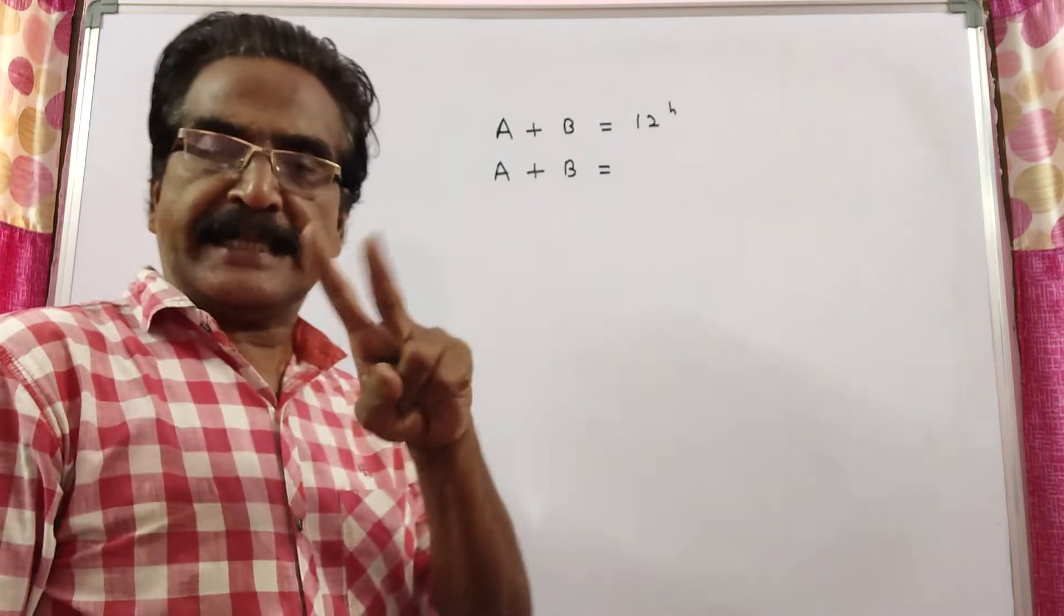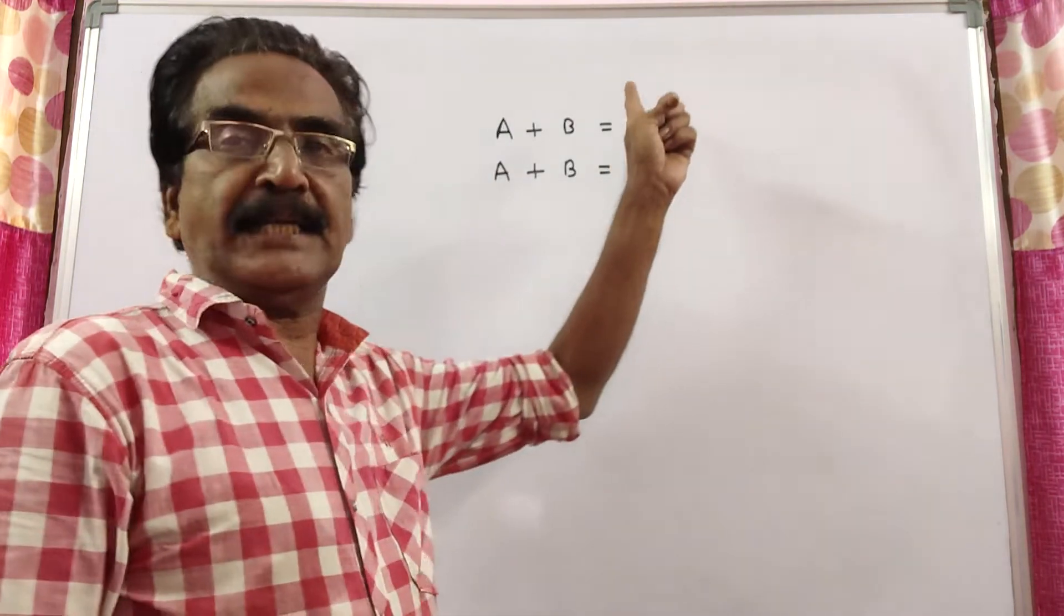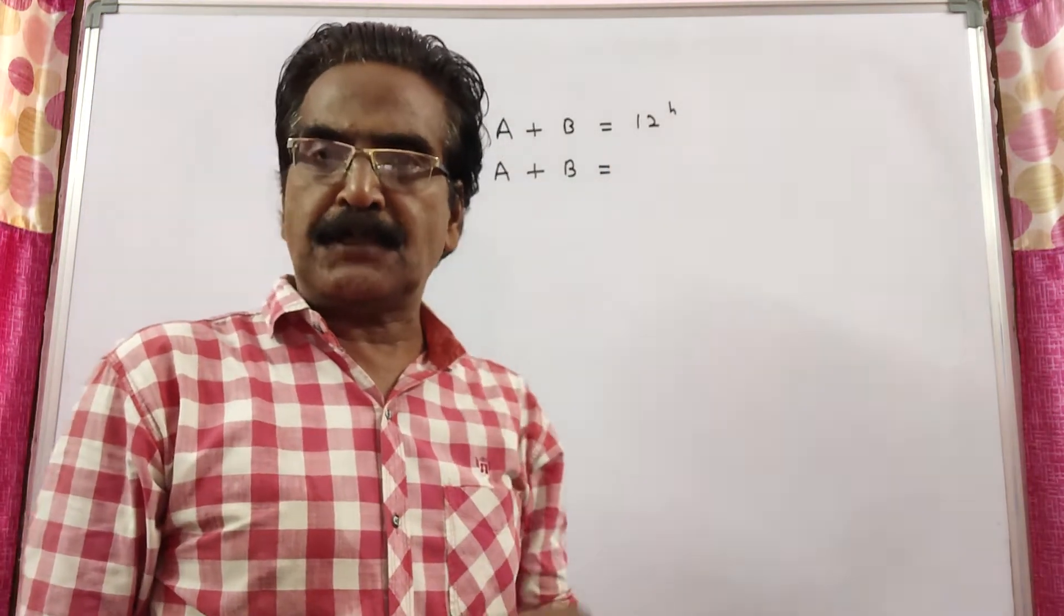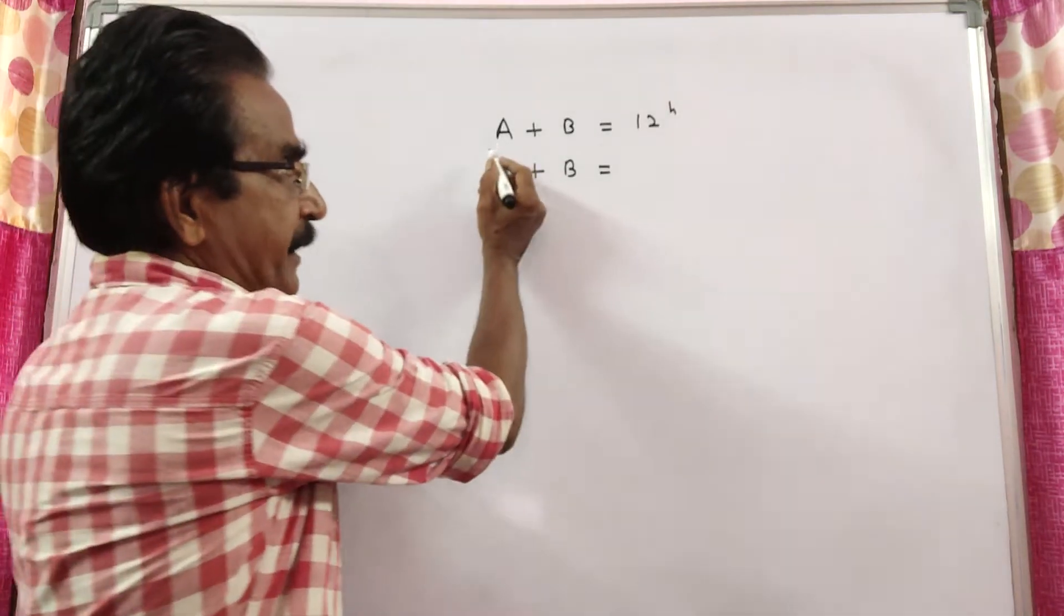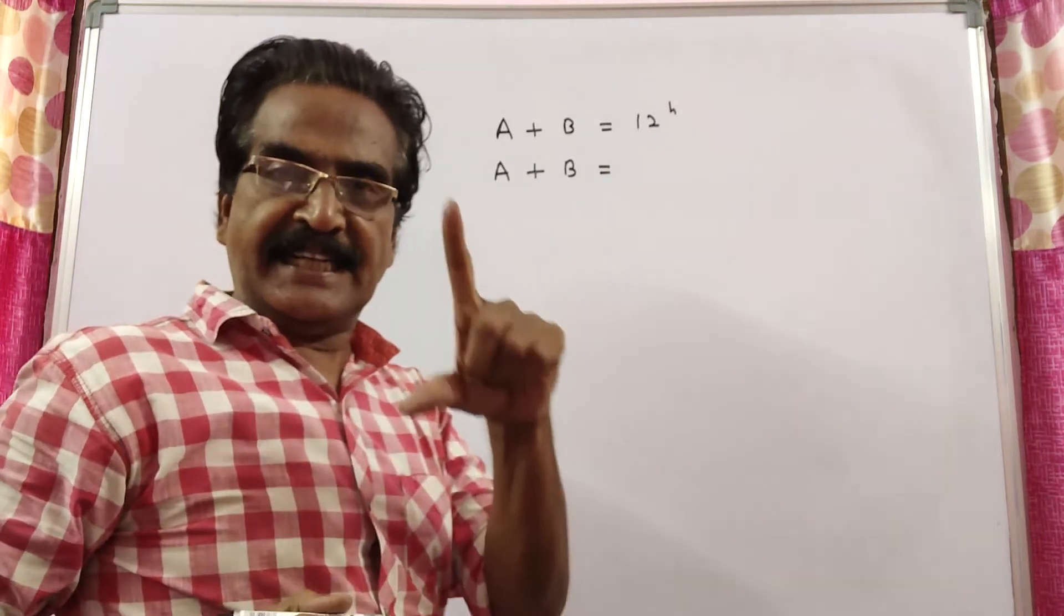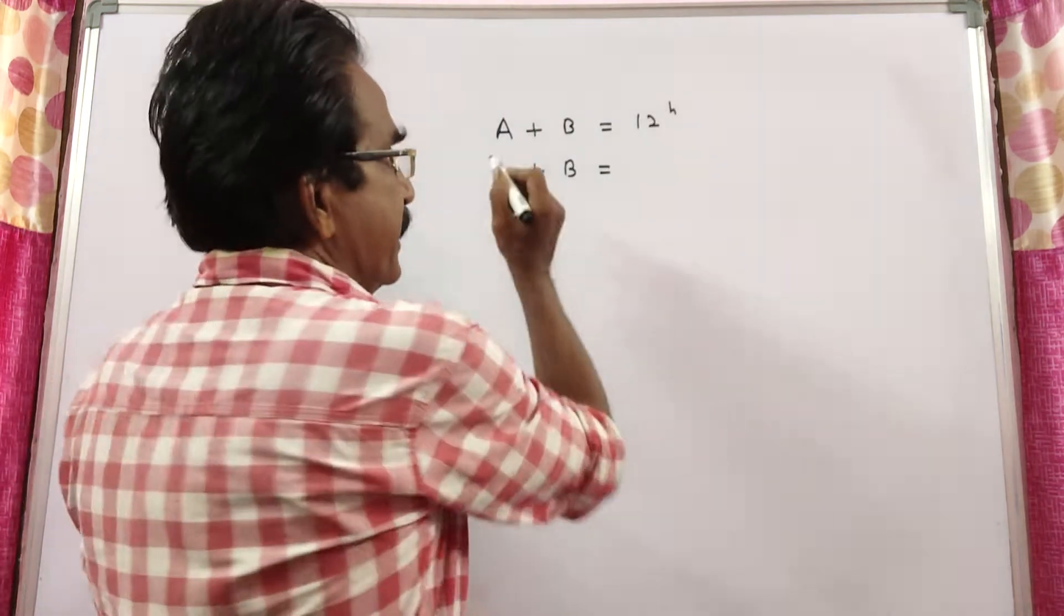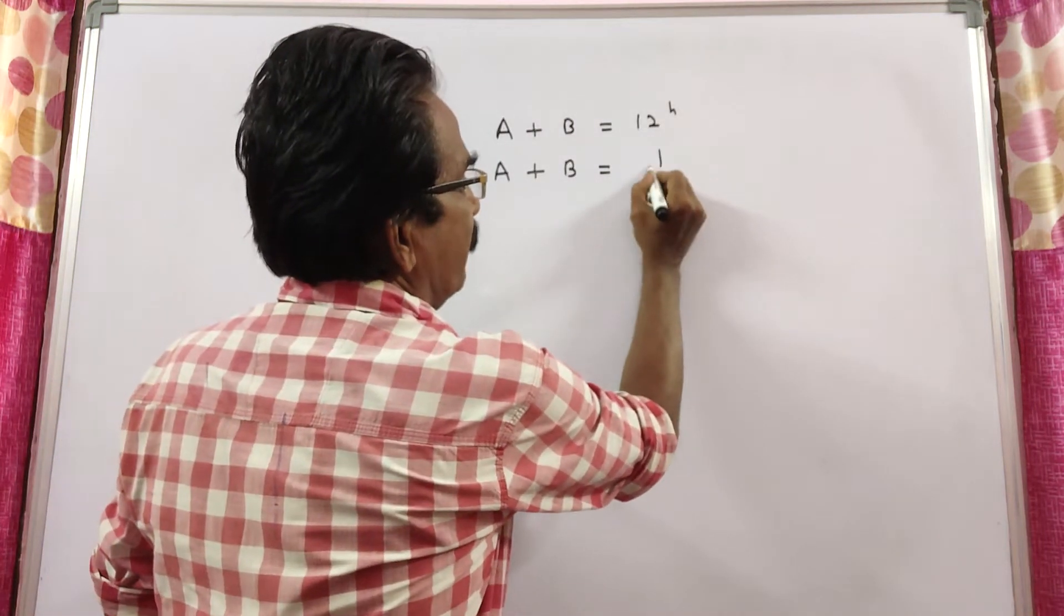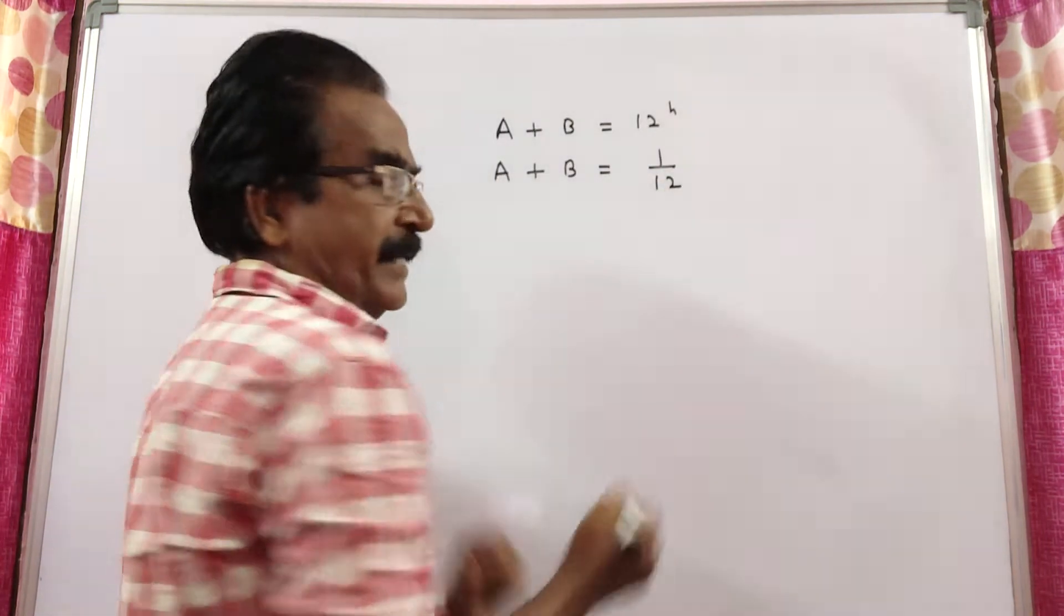Two pipes can fill a swimming pool in 12 hours. Say the two pipes are A and B. A and B can fill a swimming pool in 12 hours. That is, the work done by A and B in one hour is 1 by 12.